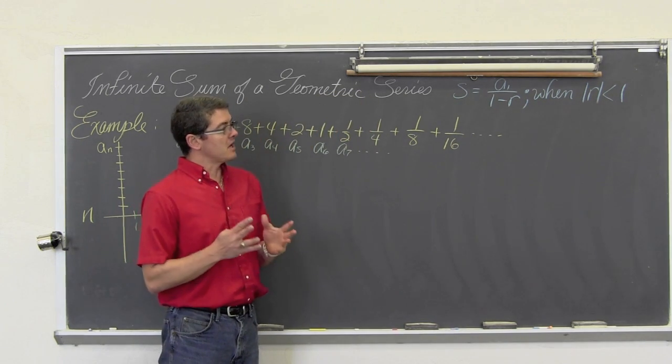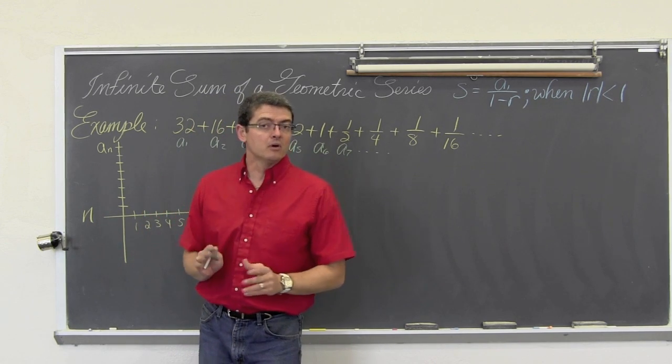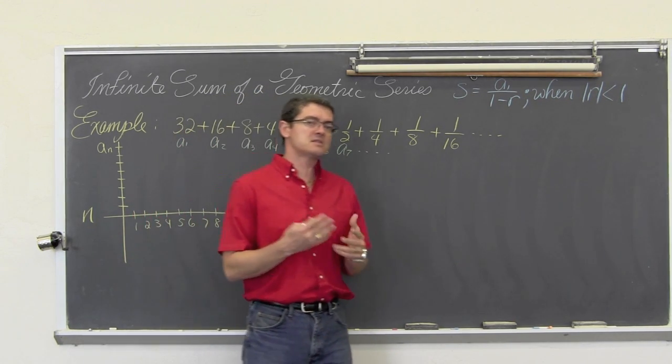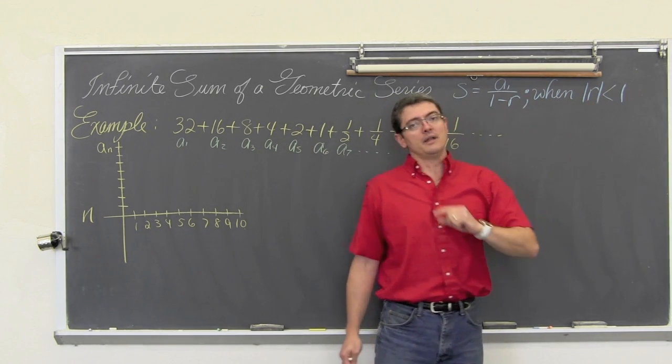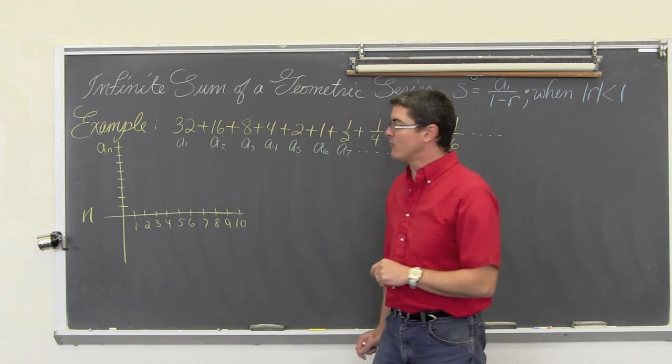Now, this formula does not always work. It will pretty much always give you a number, but that number is only going to be a valid infinite sum when your r value, the absolute value of your r value, is less than 1. Or your r value is greater than negative 1 and less than positive 1.